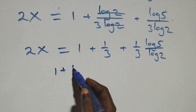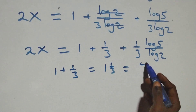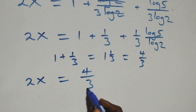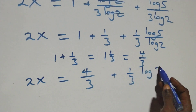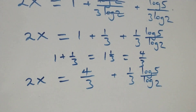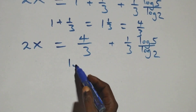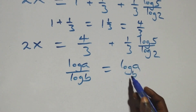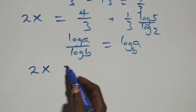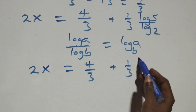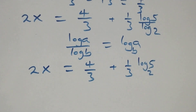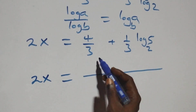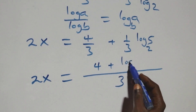Now, 1 plus 1 over 3 is the same as 4 over 3. So this becomes 2x equals 4 over 3 plus (1 over 3) times (log 5 over log 2). We apply the change of base formula: log a over log b is the same as log base b of a. So all we have becomes 2x equals 4 over 3 plus (1 over 3) times log base 2 of 5. Bringing this together as one fraction: 2x equals (4 plus log base 2 of 5) over 3.